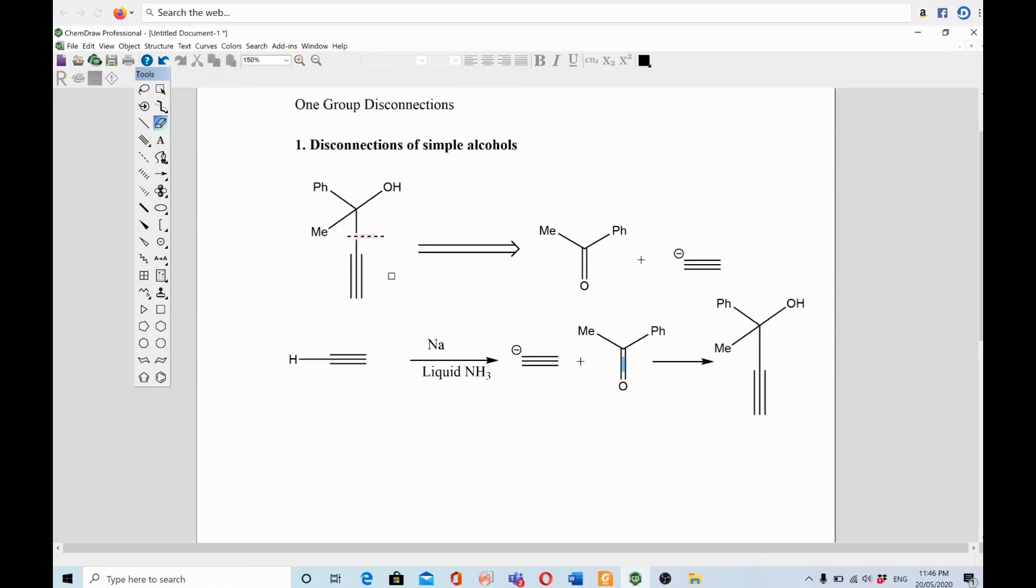Now recapitulate in 20 seconds: you are given this target molecule, disconnect it from the triple bond, make it a ketone and acetylide. Synthesis starts from alkyne, make it a negative charge and react with ketone, and boom you get the product.